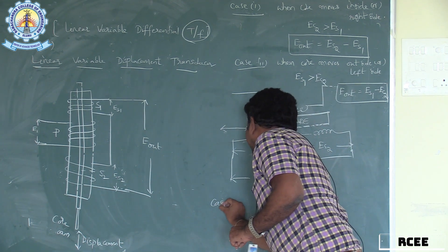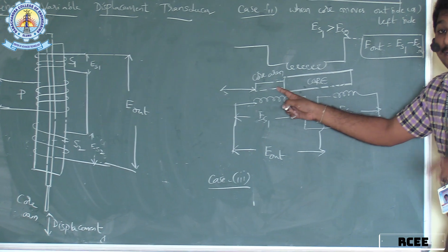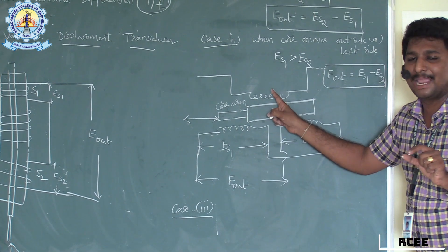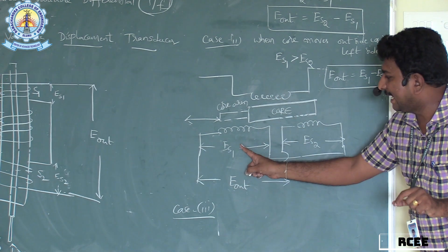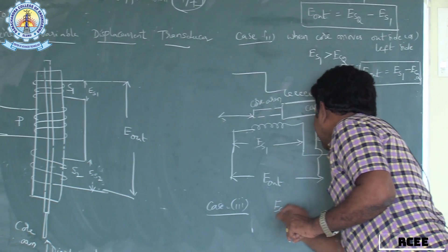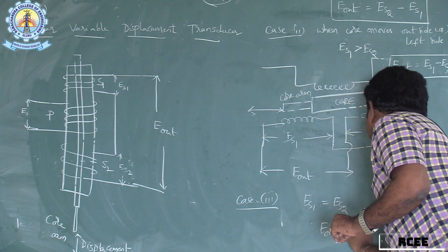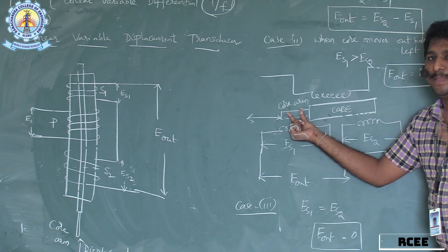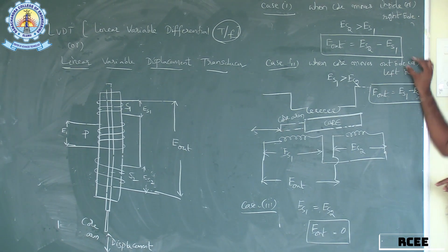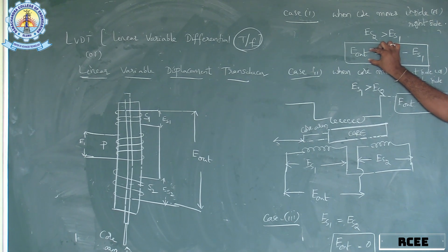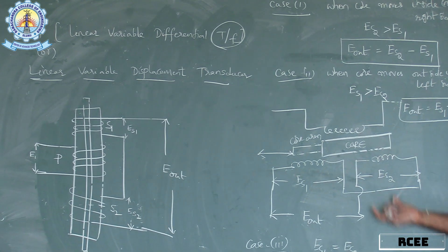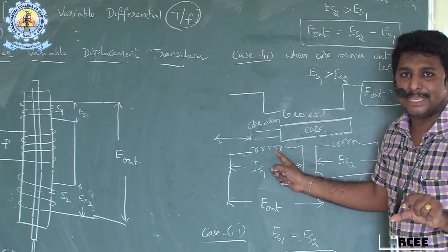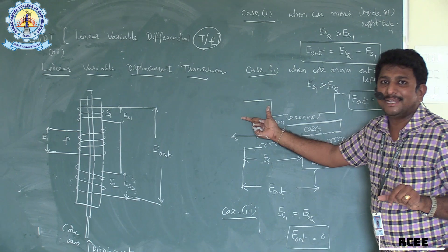Case 3: when the core is at the null position — the equilibrium condition — the flux linkages between the two secondary windings and the primary winding are the same. In this case, ES1 = ES2, therefore Eout = 0. According to the movement or displacement of the core arm, the displacement is converted into a measurable output voltage, which is the electrical parameter. This is how LVDT converts the physical quantity displacement into electrical quantity voltage.